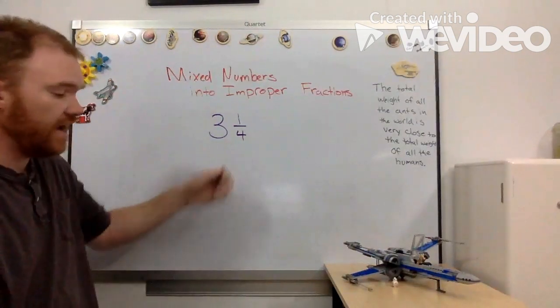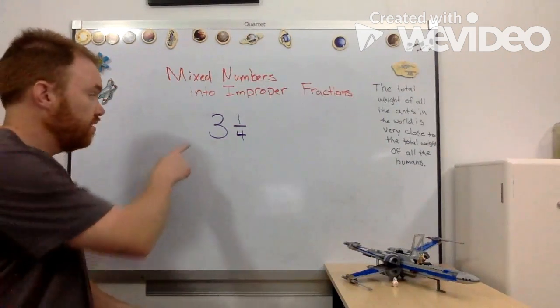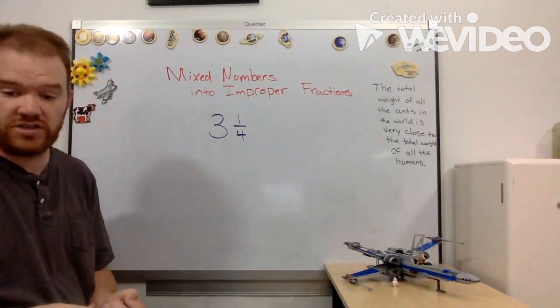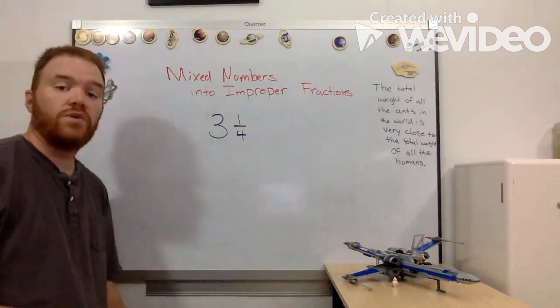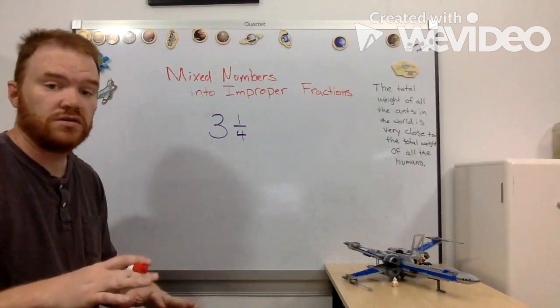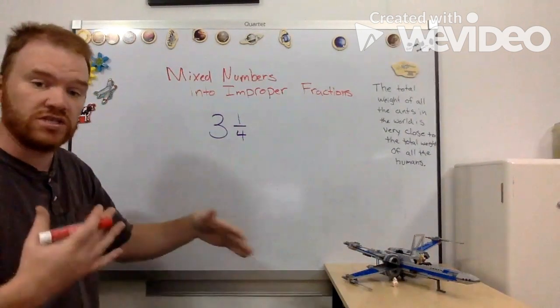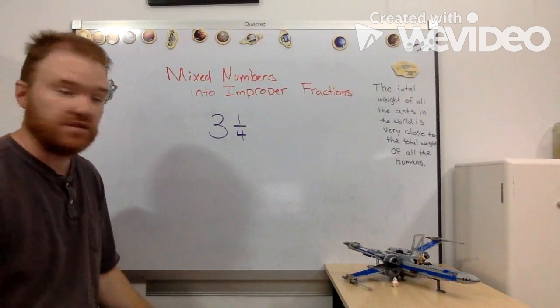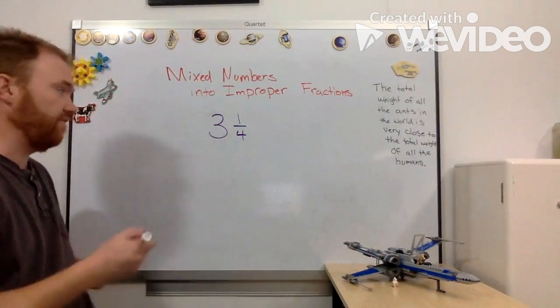Now if I want to take that mixed number and turn it into an improper fraction, remember improper fractions are where we have numbers that the numerator is bigger than the denominator, so it looks kind of different but it's the same value. So we're going to change this into an improper fraction.